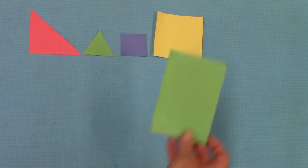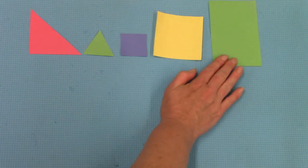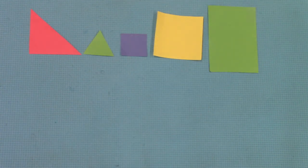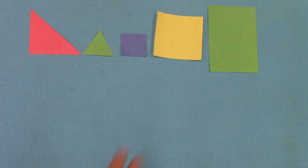So today as we do the attribute train game, I would like for your shapes to be different in two ways and the same in one.